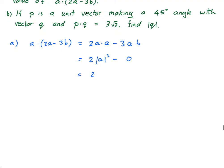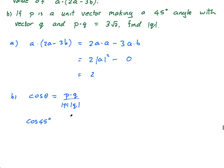Part b: if p is a unit vector making a 45-degree angle with vector q, and p dot q is 3 root 2, find the magnitude of q. That seems somewhat confusing. However, we're looking at two vectors and an angle between them, so I'm definitely going to need the formula: cos(theta) equals p dot q over magnitude of p times magnitude of q. It says p is a unit vector — q it doesn't say is a unit vector. The angle between them is 45 degrees. Note that they're using degrees here. So this equals p dot q, and they tell us p dot q is 3 root 2.